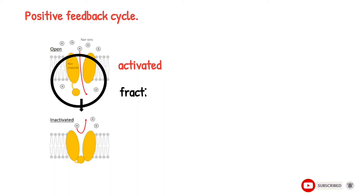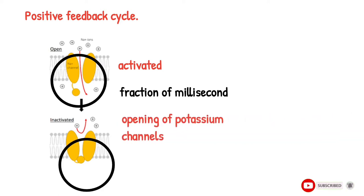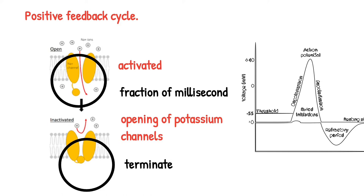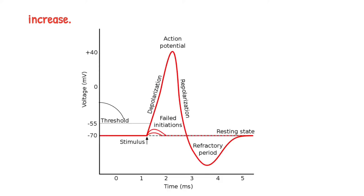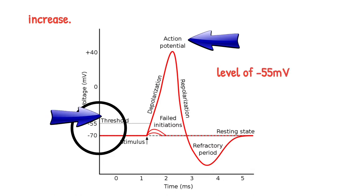Then, within another fraction of a millisecond, the rising membrane potential causes closure of the sodium channels and opening of potassium channels, and the action potential soon terminates. A sudden rise in membrane potential of about 15 millivolts is usually required. Therefore, a sudden increase in the membrane potential in a large nerve fiber from minus 70 millivolts up to about minus 55 millivolts usually causes the explosive development of an action potential. This level of minus 55 millivolts is said to be the threshold for stimulation of nerve fiber.